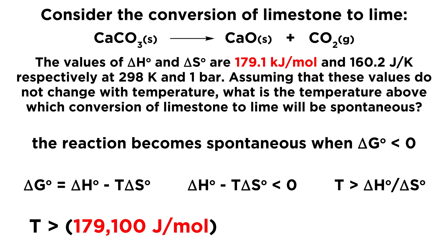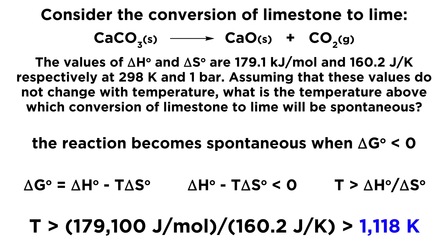We can go ahead and plug in the values that we know. We have 179.1 kilojoules per mole for delta H, but our entropy value has joules, so these are going to need to agree. Let's multiply by 1,000 to get 179,100 joules per mole, and then divide that by 160.2 joules per kelvin. That way the joules will cancel, and we end up with 1,118 kelvin.